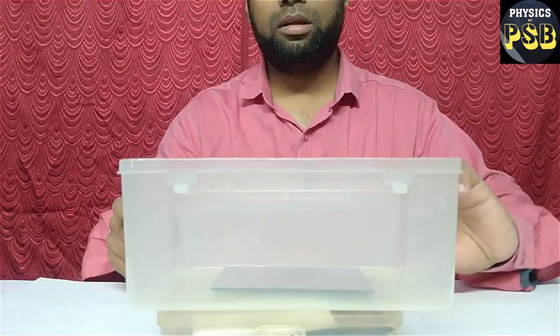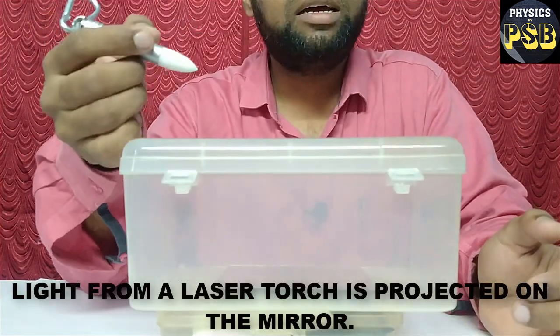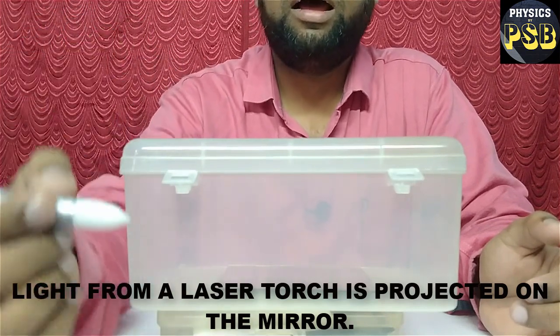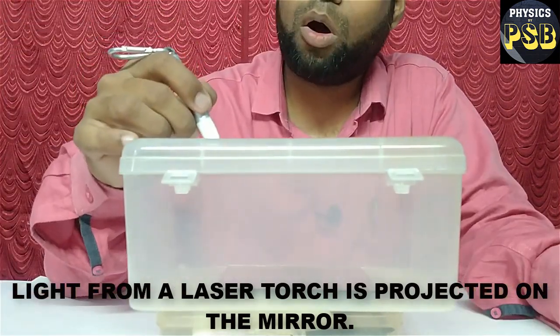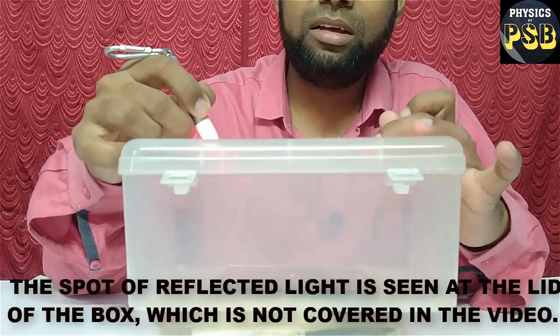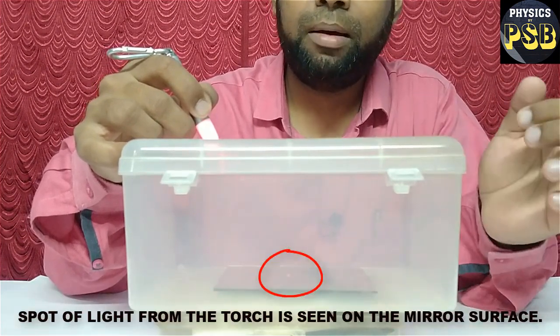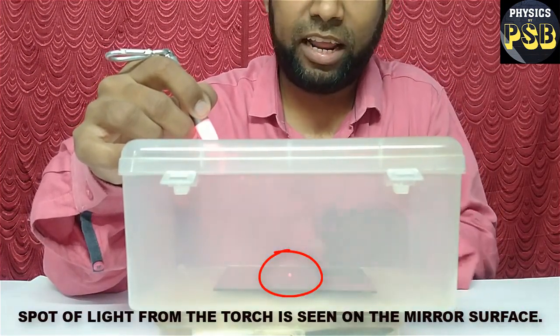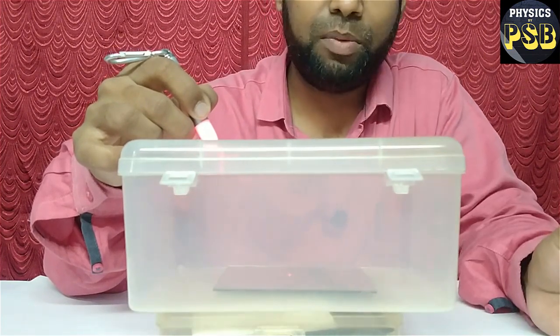Then, I close it. I project the laser light from this toy laser. Now, I project light on the mirror. You can see a spot of light here, which is the result of reflection. But the incident ray as well as the reflected ray is not visible here.